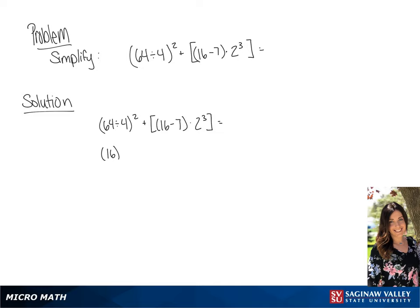So in our first set of parentheses we get 16 squared plus 9 times 8. We're going to simplify the second exponent so we get 256 plus 72 equals 328.